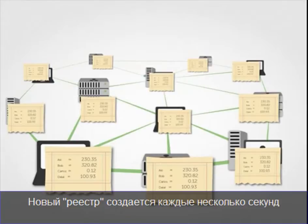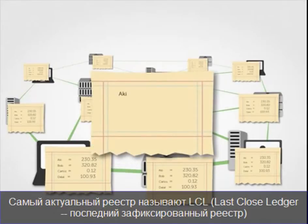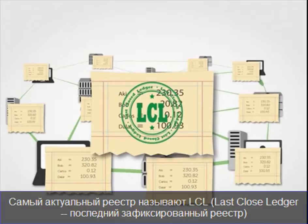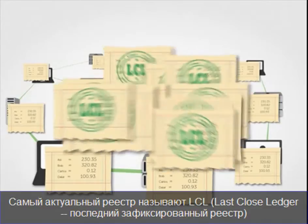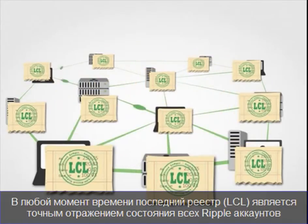A new ledger is created every few seconds. The most recent ledger is referred to as the last closed ledger. At any time, the last closed ledger is a perfect record of all Ripple accounts.